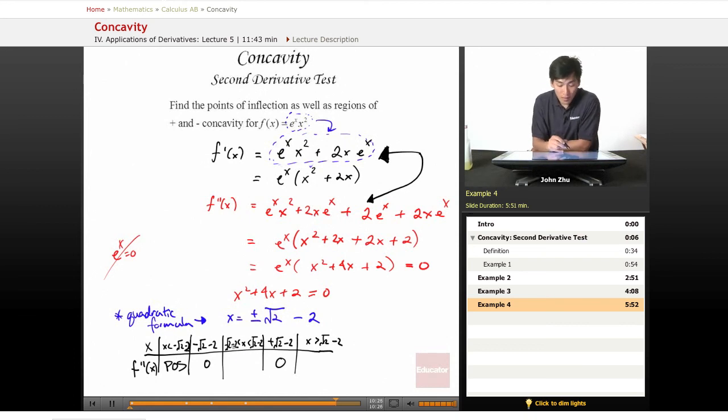So positive. And then in between negative root 2 minus 2 and positive root 2 minus 2, plug in an arbitrary value, you'll find that the second derivative is negative. And for the bigger numbers, it's going to be positive. So here we have your two points of inflection.